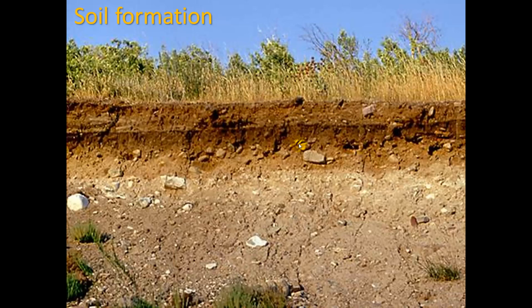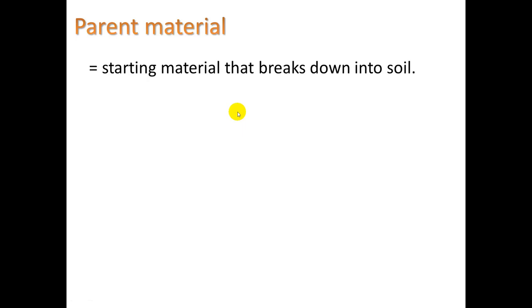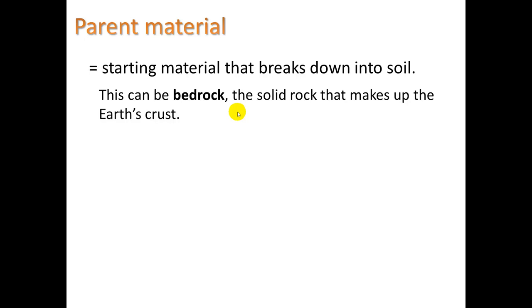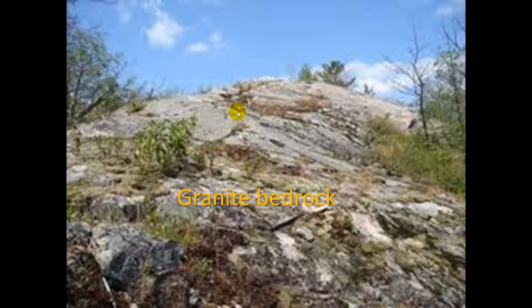Let's take a look at how soil is formed. Here we see a cross section of different layers of soil. This starts with the parent material — the starting material that breaks down into soil. This can be bedrock, the solid rock that makes up the Earth's crust. It affects the resulting soil; for example, sandstone bedrock transforms into sandy soil. There are lots of areas around Santa Barbara where the soil is very sandy. Here's a picture of some granite bedrock, which over a long period of time will break down through weathering into soil.